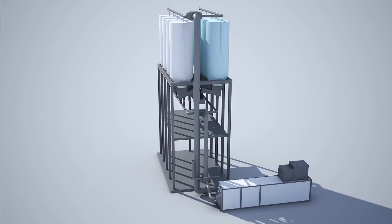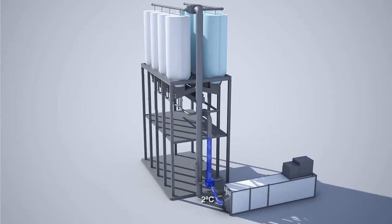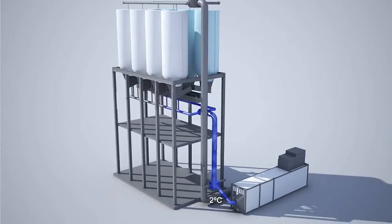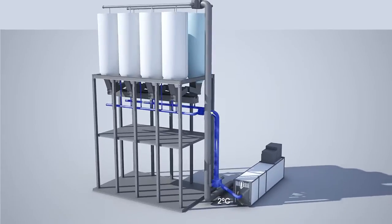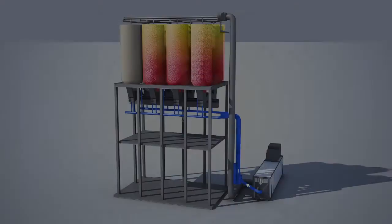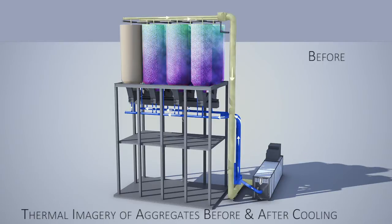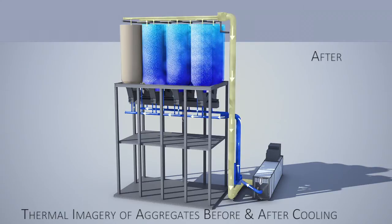The cooling can be done in the existing inline aggregate bins, separate bins or vertical silos. Furthermore, the air after cooling the aggregates could be recycled, thus reducing the power consumption wherever possible.